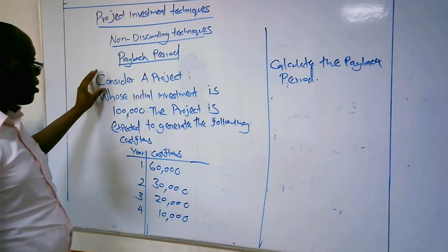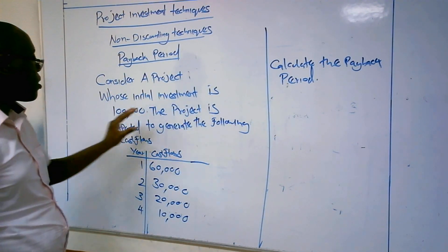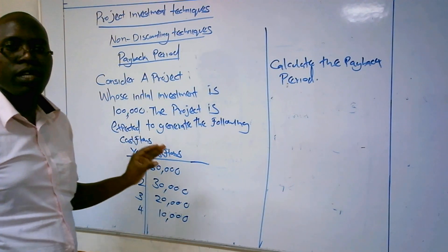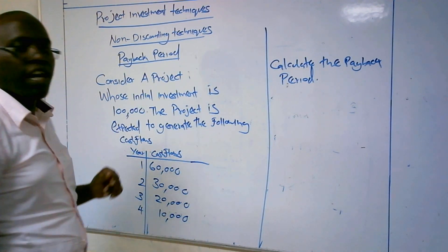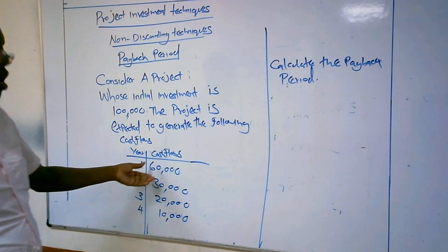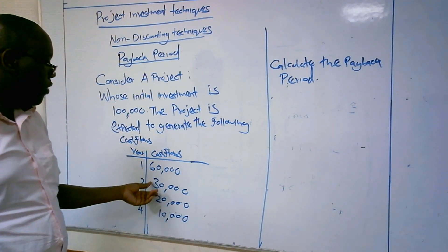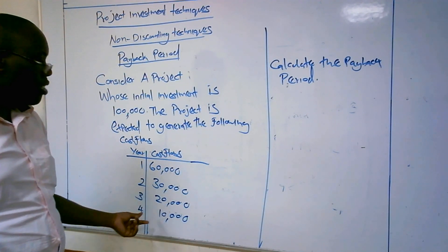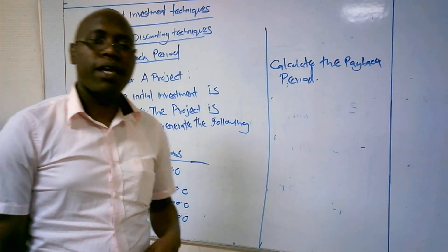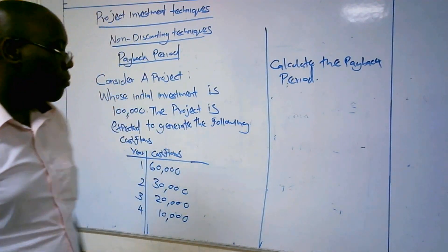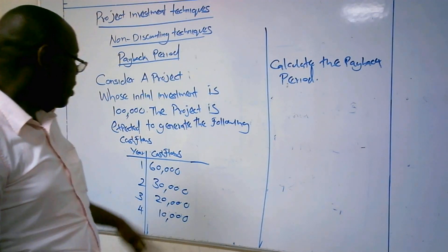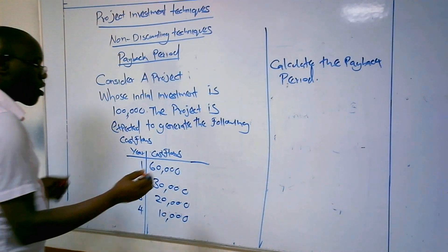For example, consider this question: the initial investment is $100,000, and the project is expected to generate the following cash flows — $60,000 in year 1, $30,000 in year 2, $20,000 in year 3, and $10,000 in year 4. We want to understand how we can calculate the payback period.